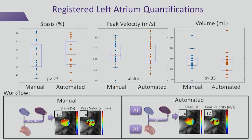Here we can see a manual versus automated workflow, comparing manual segmentations registered together versus AI segmentations registered together for stasis, peak velocities, and volumes. We did not find a statistically significant difference using a Wilcoxon rank-sum test between these, for the p-values shown above.